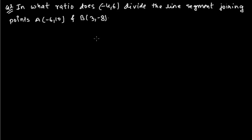Hi friends, here is the second problem in section formula of coordinate geometry. The question says: in what ratio does point (-4, 6) divide the line segment joining the points A(-6, 10) and B(3, -8)? So we need to find out the ratio by which this point (-4, 6) is dividing the line joining the points A and B.